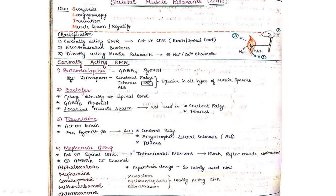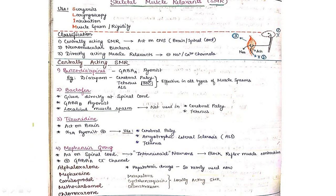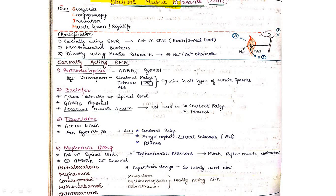Let's begin the discussion of skeletal muscle relaxation (SMR). We have already completed general anesthesia and local anesthesia; this is the next topic. SMR drugs are used during surgery, laryngoscopy, intubation, and in cases of muscle spasm or muscle rigidity. As a mnemonic: SLIP — Surgery, Laryngoscopy, Intubation, and muscle sPasm.